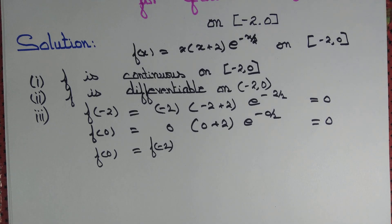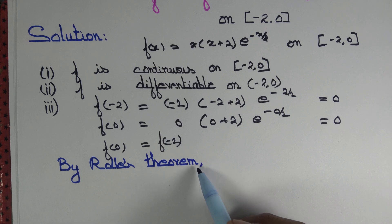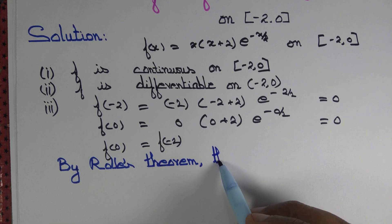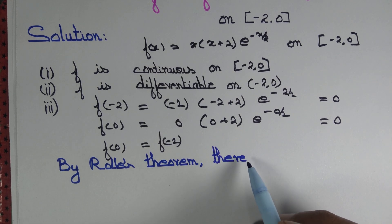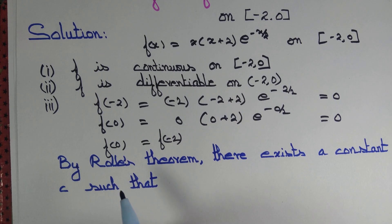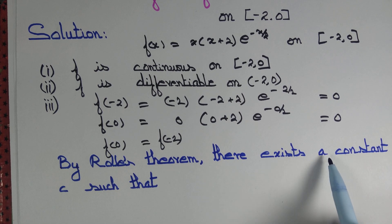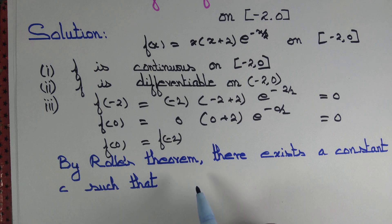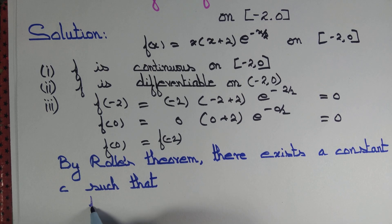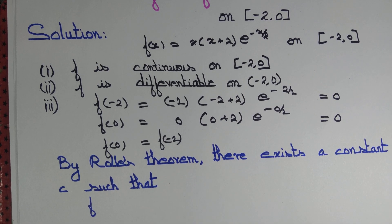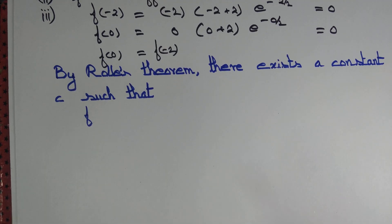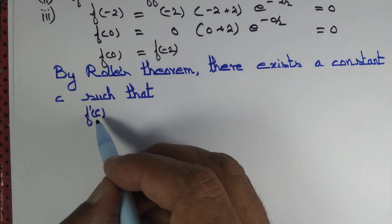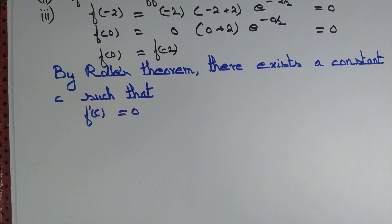Therefore f satisfies Rolle's theorem. Since all three criteria are satisfied — f is continuous on the closed interval, differentiable on the open interval, and the values at the endpoints are equal — we can apply Rolle's theorem. By Rolle's theorem, there exists a constant c such that f'(c) = 0.